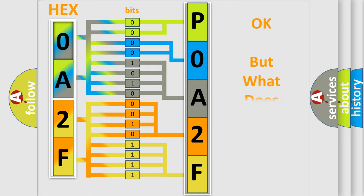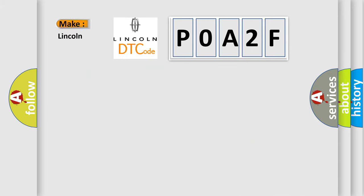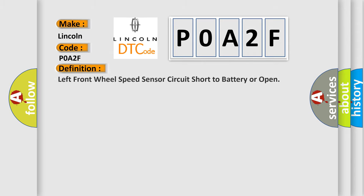The number itself does not make sense to us if we cannot assign information about what it actually expresses. So, what does the diagnostic trouble code P0A2F interpret specifically for Lincoln car manufacturers? The basic definition is: left front wheel speed sensor circuit short to battery or open.